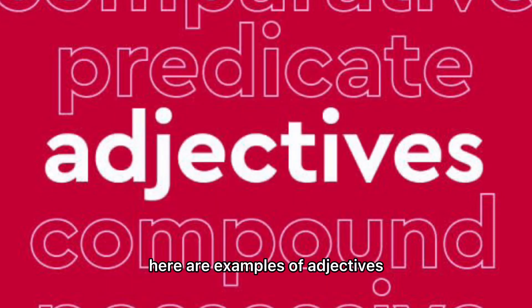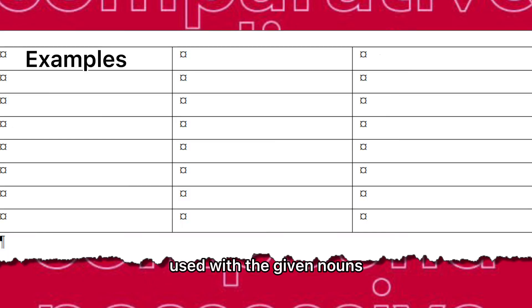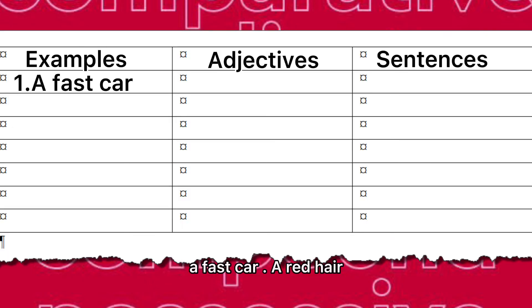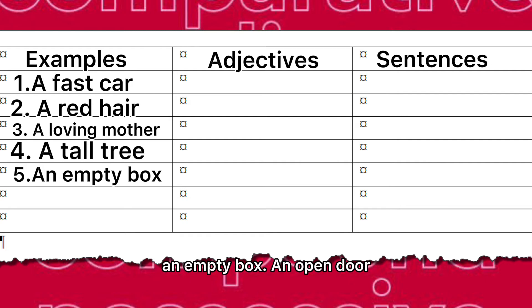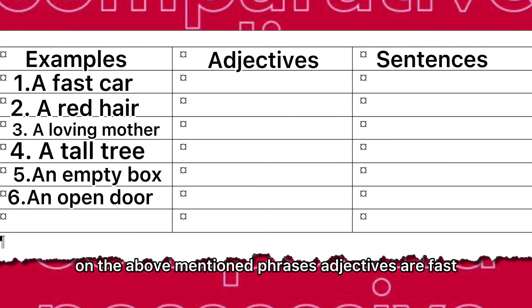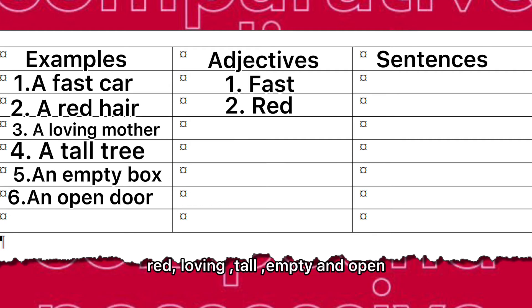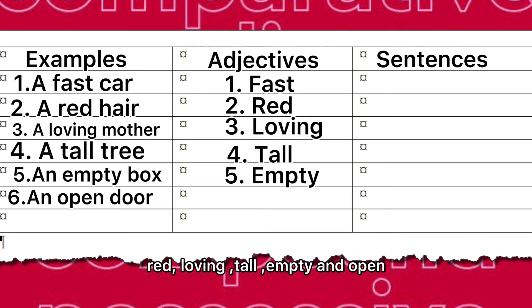Here are examples of adjectives used with the given nouns: a fast car, a red hair, a loving mother, a tall tree, an empty box, an open door. In the above-mentioned phrases, the adjectives are: fast, red, loving, tall, empty, and open.